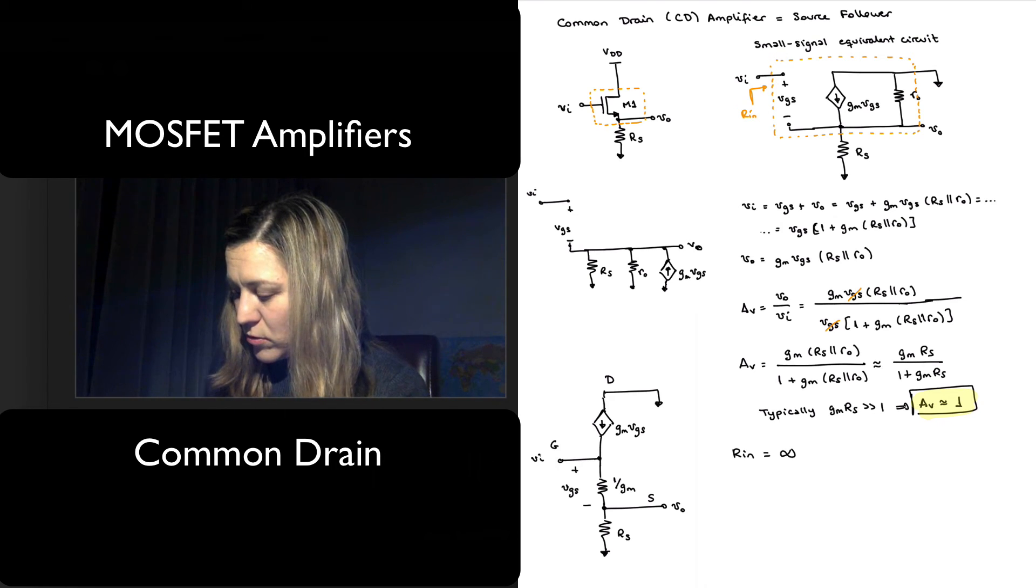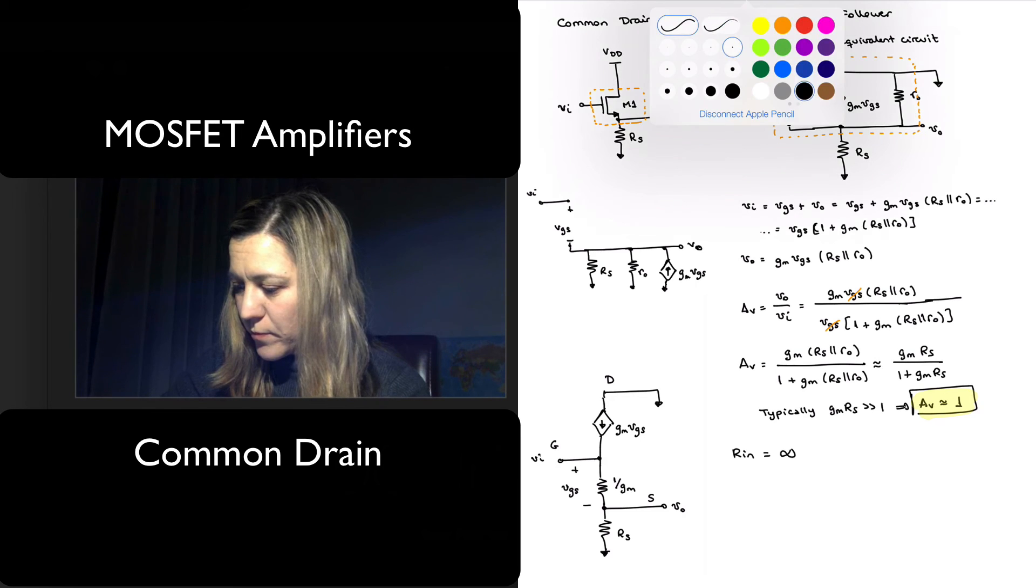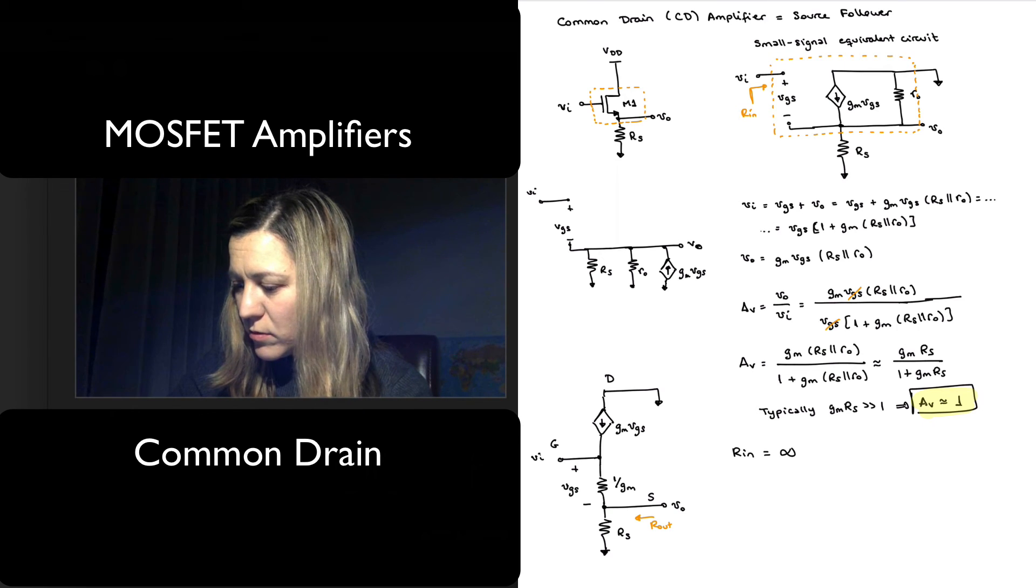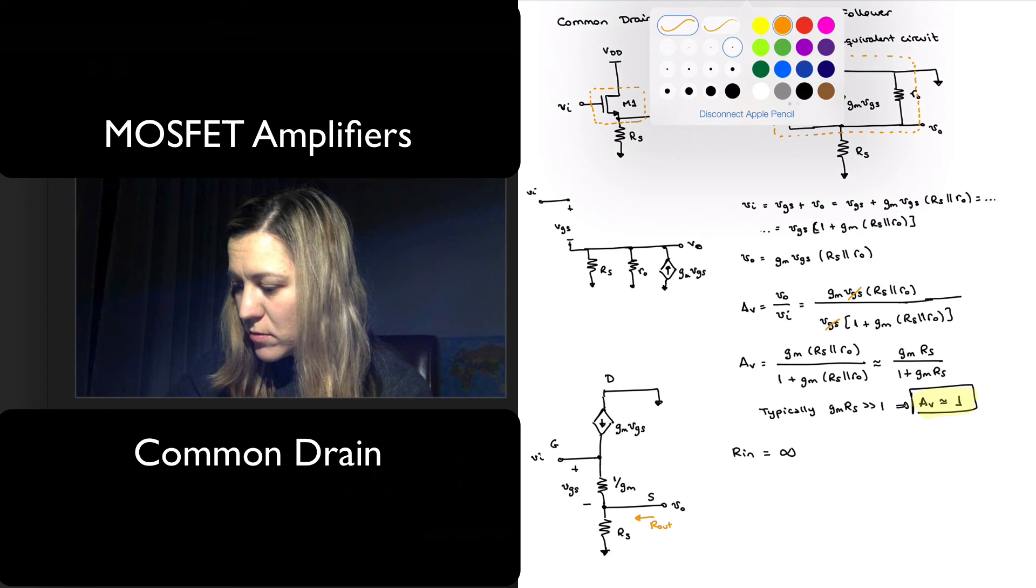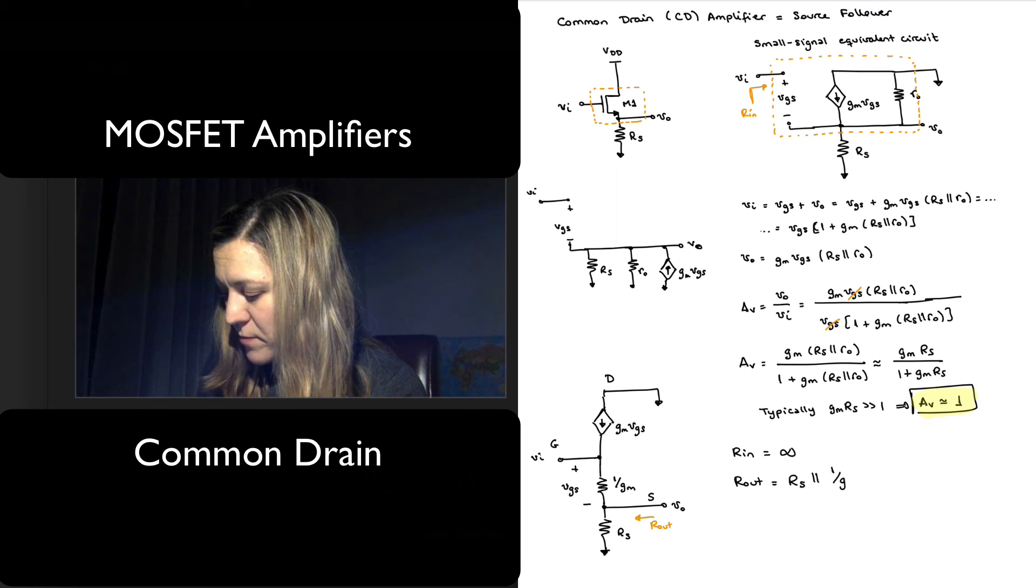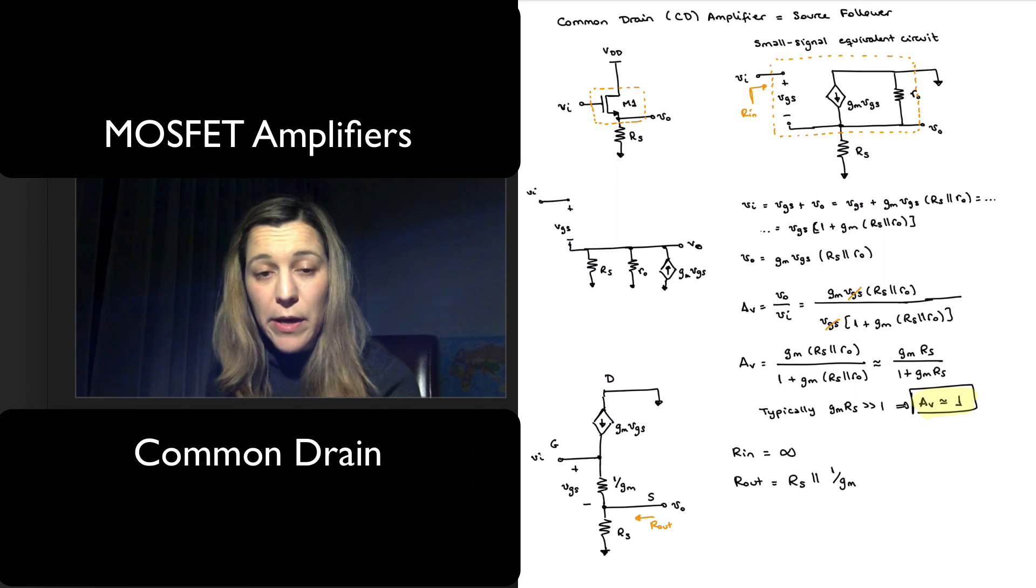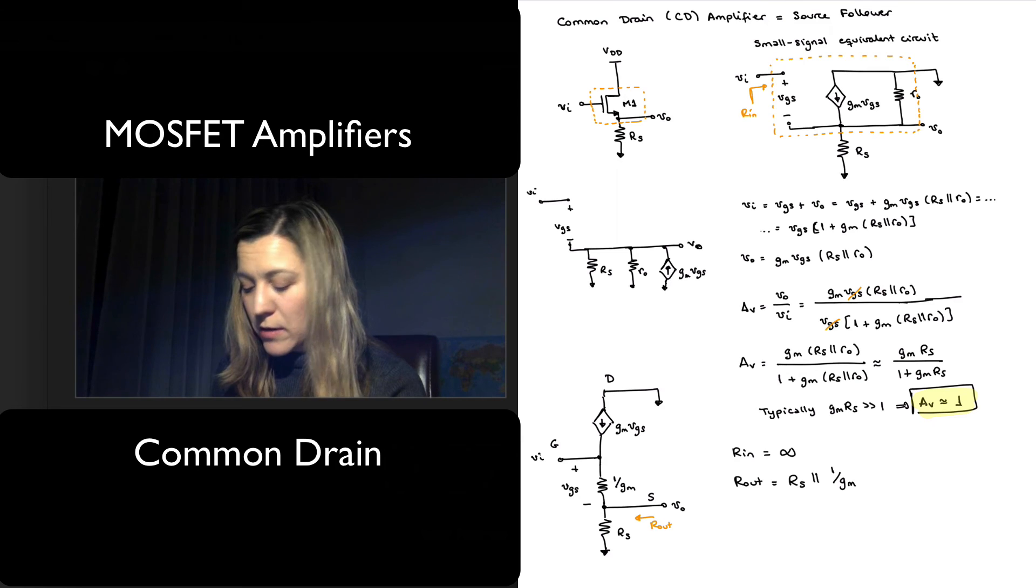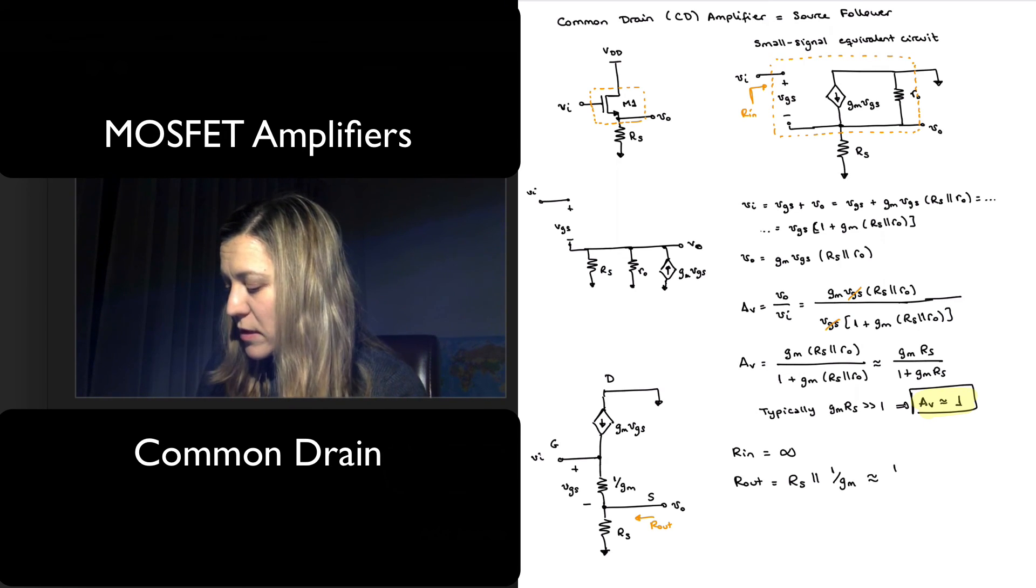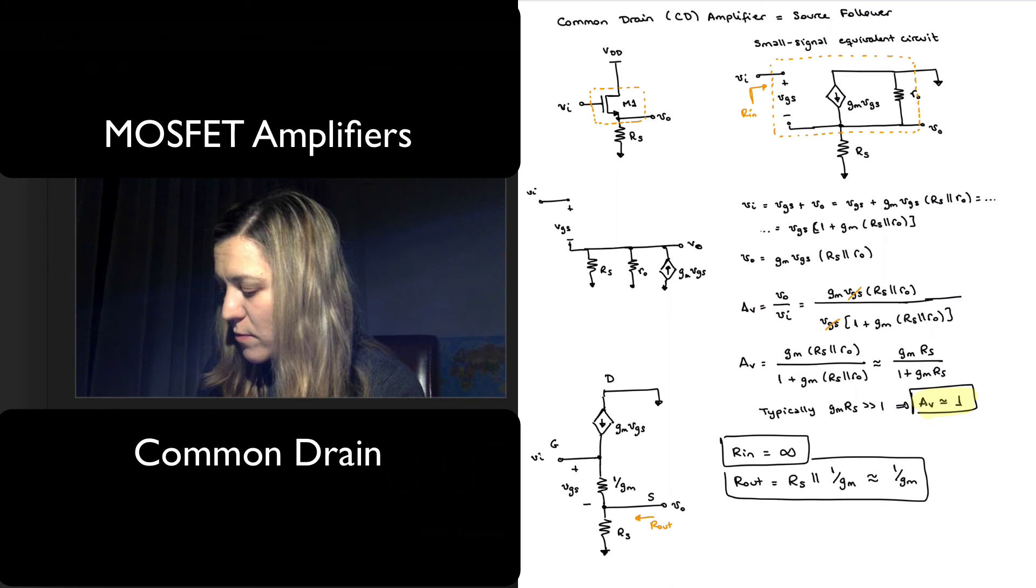And I can see my R_out resistance looking into the output terminal. It's going to be approximately equal to R_S in parallel with 1 over g_m. When I'm calculating my R_out resistance, notice that I am turning off my signal sources. Typically, 1 over g_m is going to be much smaller than R_S, and I can approximate this as 1 over g_m. So this will be my input and output resistance for my common-drain amplifier.